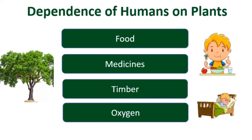What about human beings? We too are dependent on plants for food, for oxygen, and for many other things like medicines and timber. Certain plants have medicinal values and are used by us to cure various diseases. Timber is the wood we get from plants for making our homes and furniture. So human beings are dependent on plants for food, medicines, timber, and oxygen.